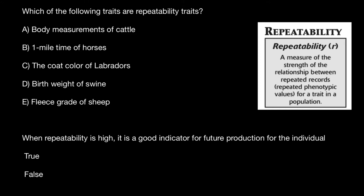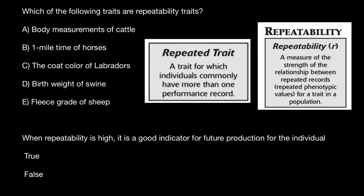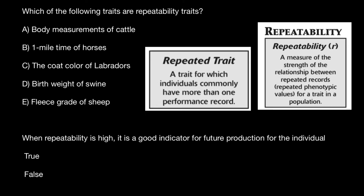Here's another definition of a repeated trait: a trait for which individuals commonly have more than one performance record. Now let's analyze the list of answers. Variant A: body measurements of cattle.